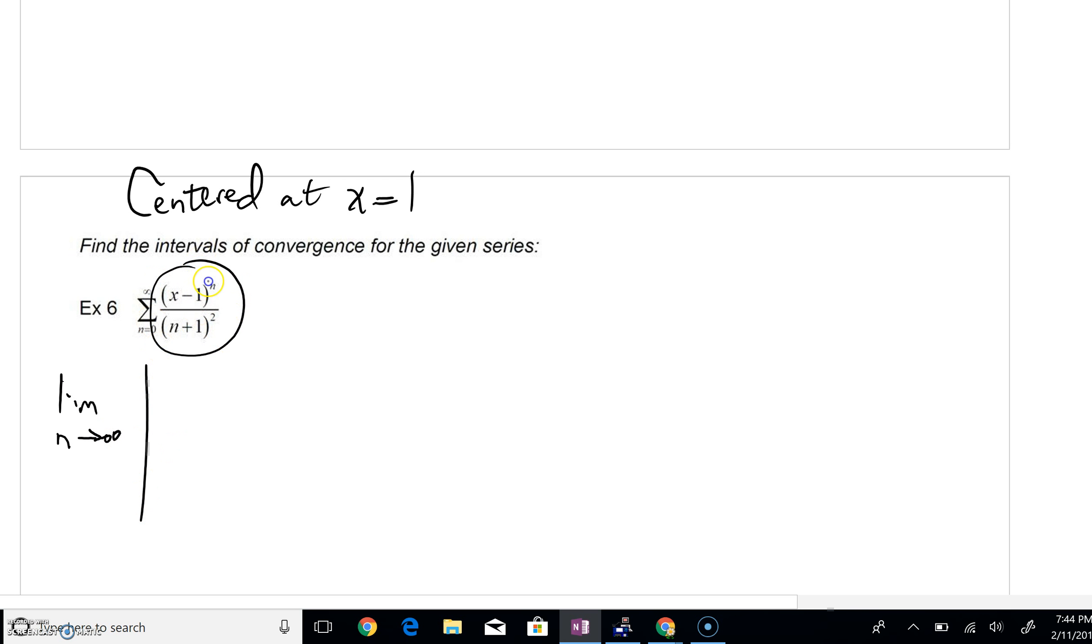And we're going to take this term, we're going to plug in the n plus one term. And n plus one plus one would become n plus two to the second. There's your n plus one term. If we divide by the nth term, that's the same thing as multiplying by the reciprocal of that nth term. So we can see really what's happening.